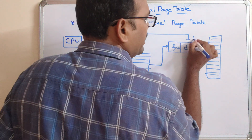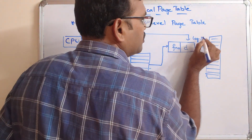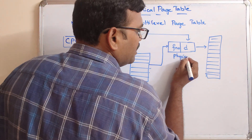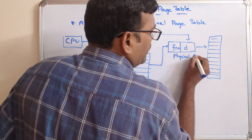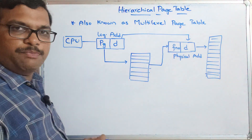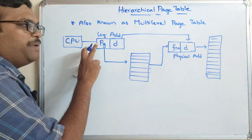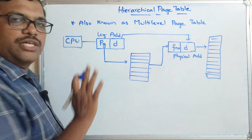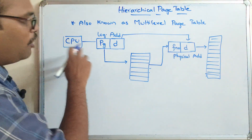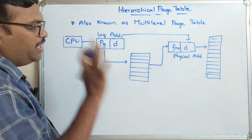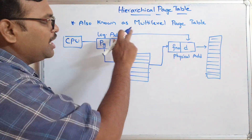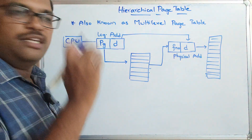So this is the physical address — adding the frame number plus displacement gives the physical address. The page number plus displacement is the logical address. This is the normal way we are having. So the question is: the logical address is given as a page number and displacement.